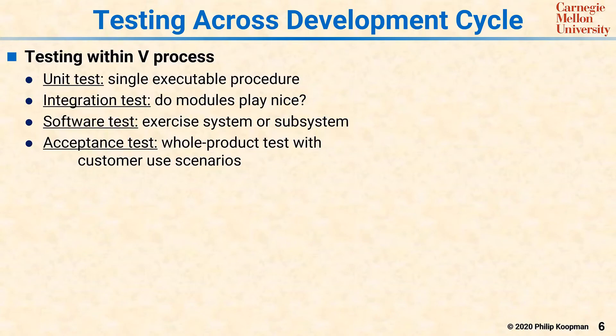While there are different approaches to testing that result in different notions of coverage, there are also different times at which you test within the V process. Unit testing, down at the bottom center of the V, typically involves executing tests against a single code module, doing subroutine tests with various inputs. These can be very extensive and get very high white box test coverage.